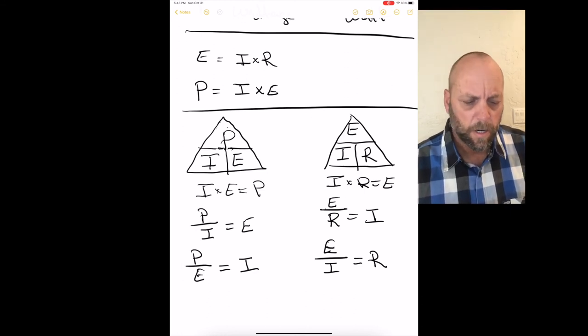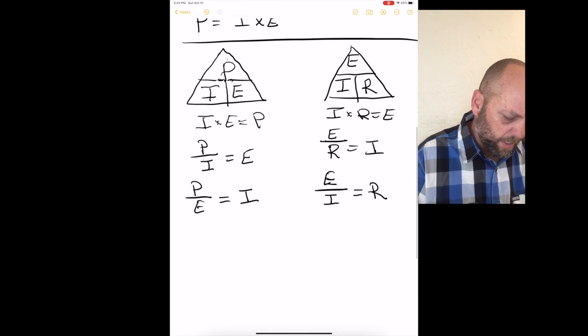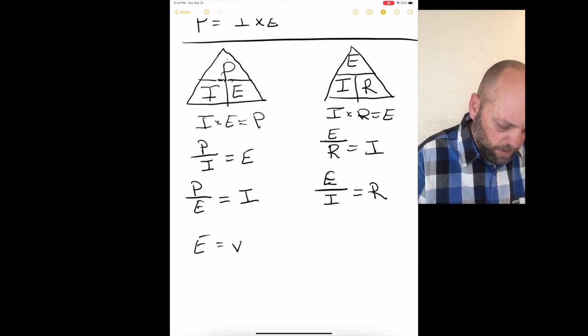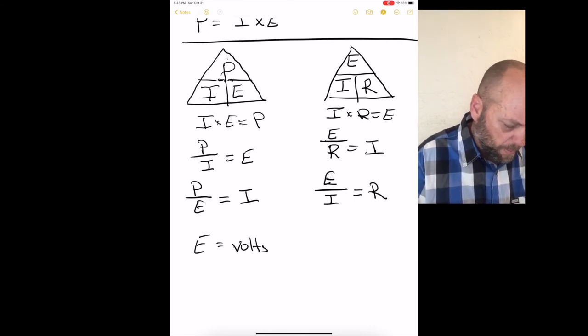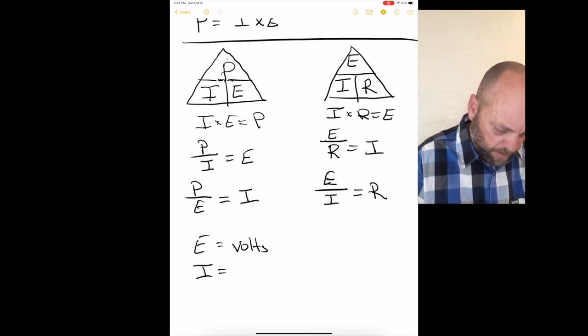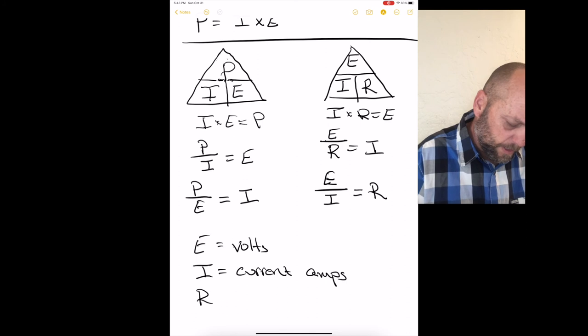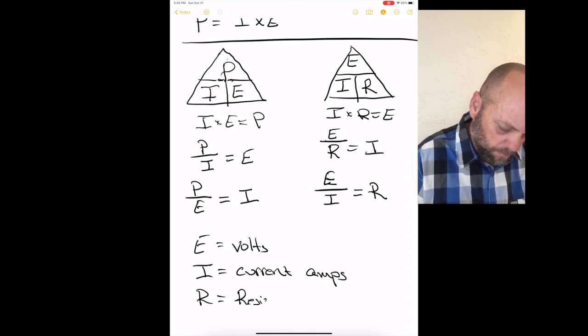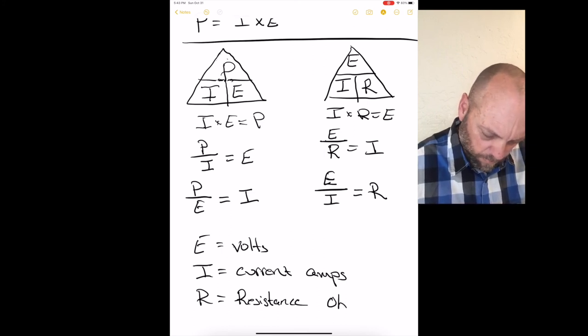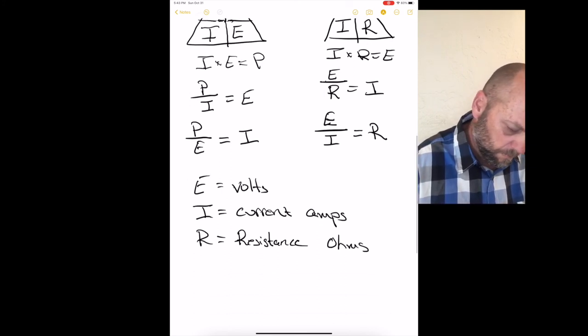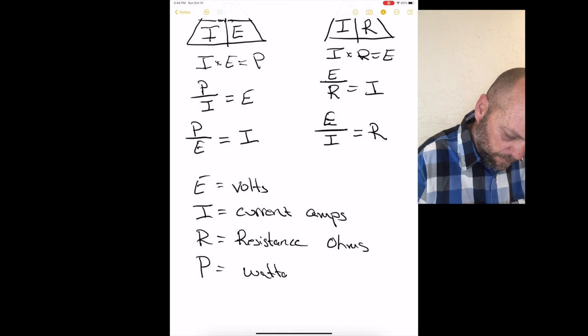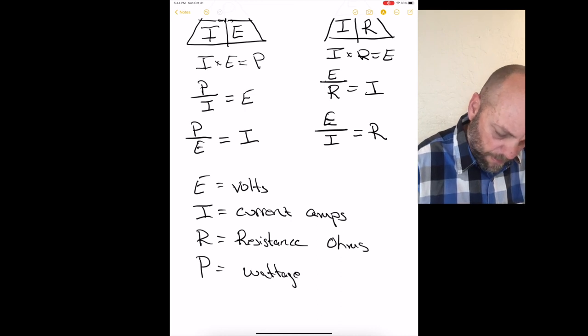The hardest thing to remember is what E stands for. E equals voltage. I equals current, or amps. R is resistance, or ohms. And P equals power, or watts.